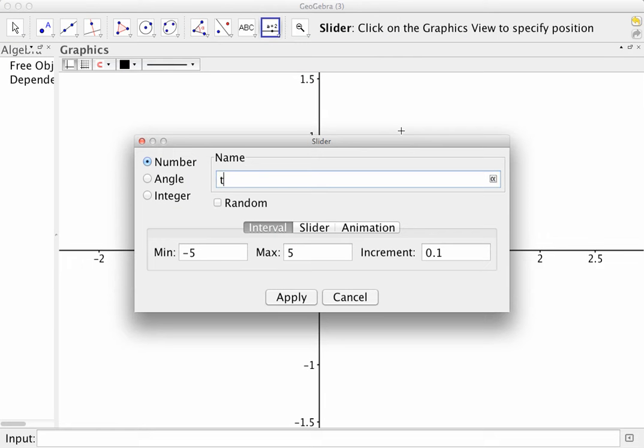And I'm going to call it t, which is for theta. And I'm going to go from 0 to, I don't know, 12, let's say 12.7, and I'm going to go by 0.1s.